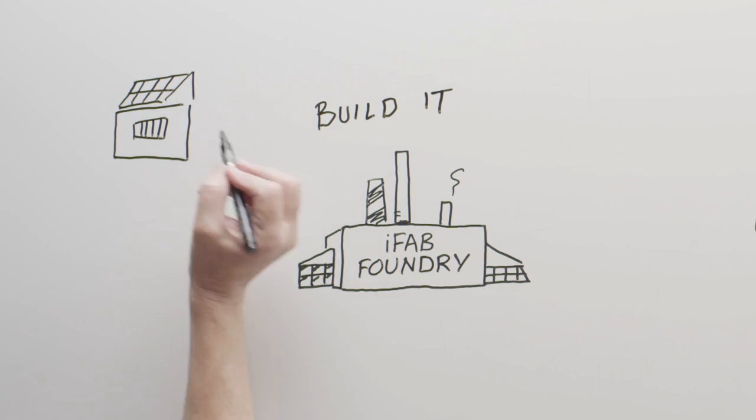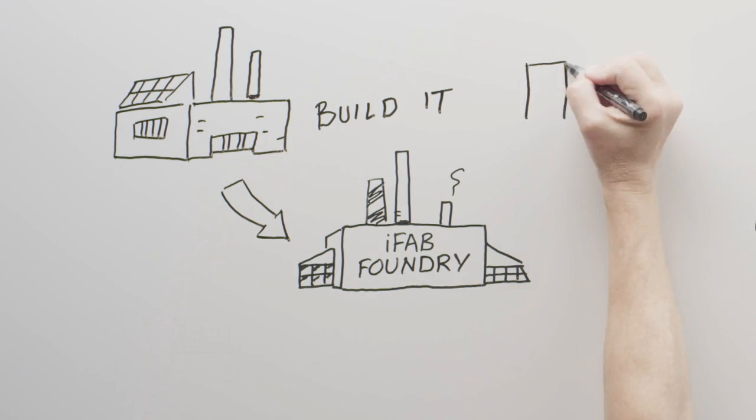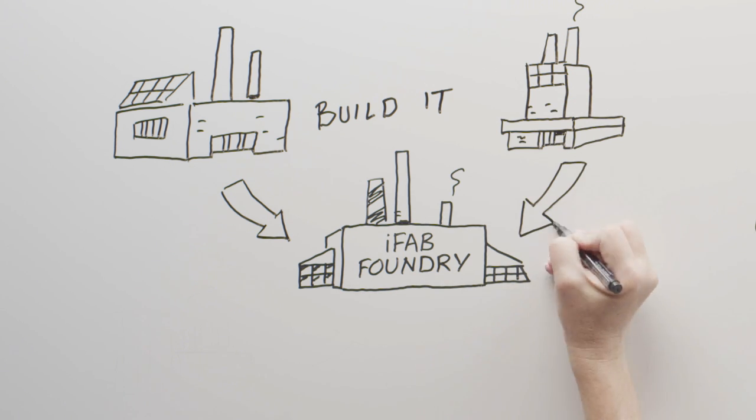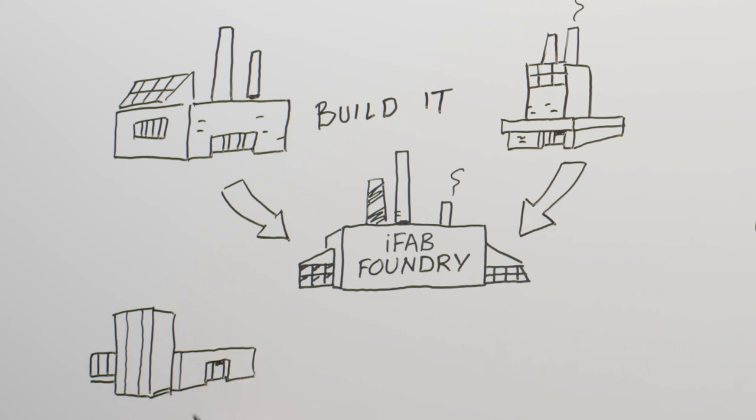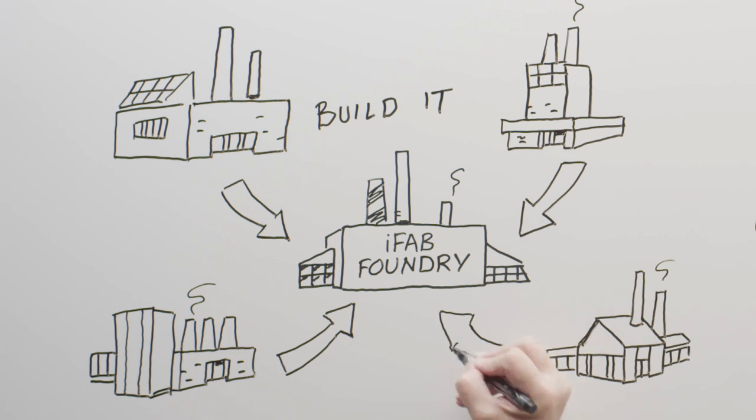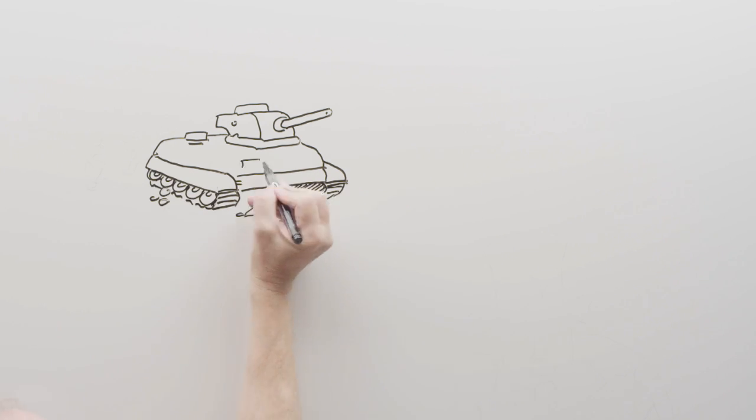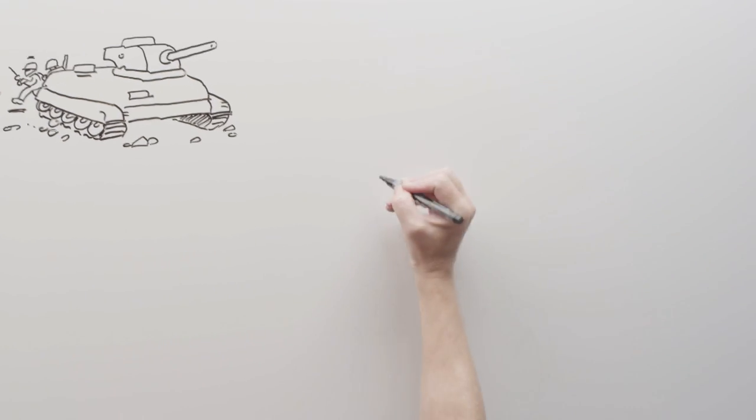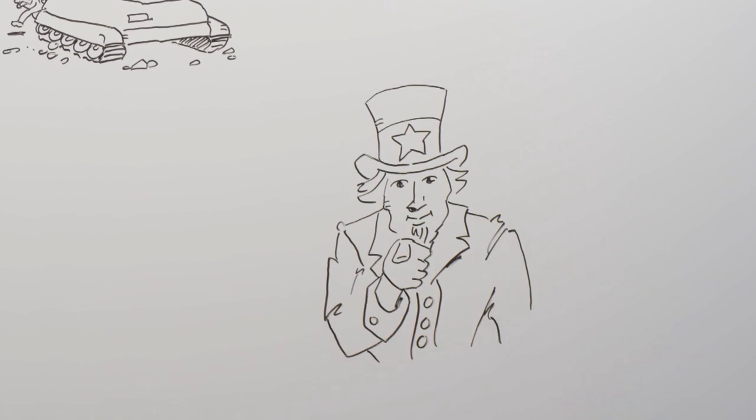The winning design for each of the three challenges will be built in the IFAB Foundry, a network of manufacturing facilities capable of rapidly reconfiguring itself to produce a vehicle according to your design specs. Once built, the FANG vehicle will roll out of the factory, ready for evaluation by the U.S. Marine Corps.